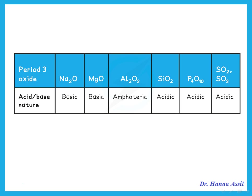If I look at period 3, going from left to right: sodium oxide and magnesium oxide are oxides of metals, so they are basic. Going into aluminium oxide — aluminium oxide is amphoteric, meaning it reacts with acids and with base. The rest of period 3 are non-metals, so their oxides are acidic. Silicon dioxide, oxides of phosphorus and sulfur — all of these are acidic.